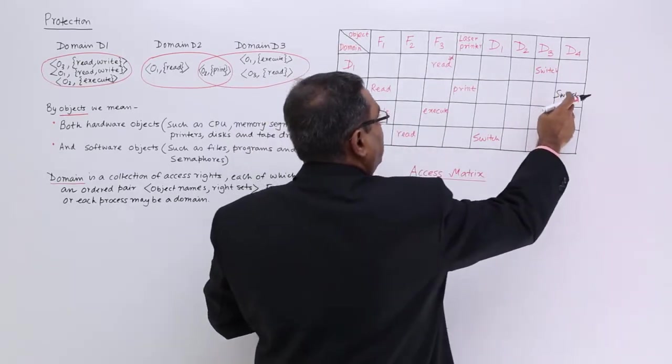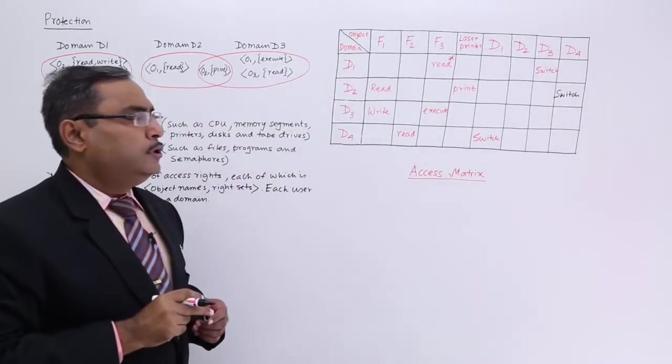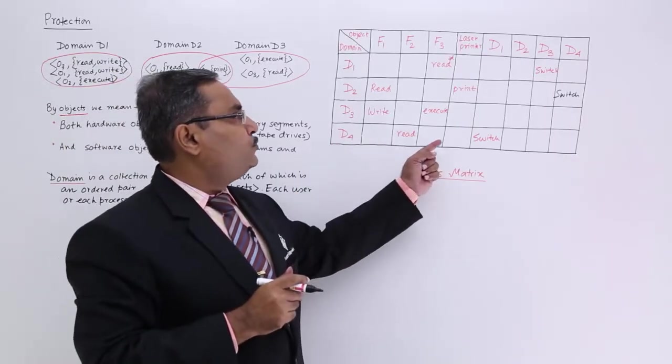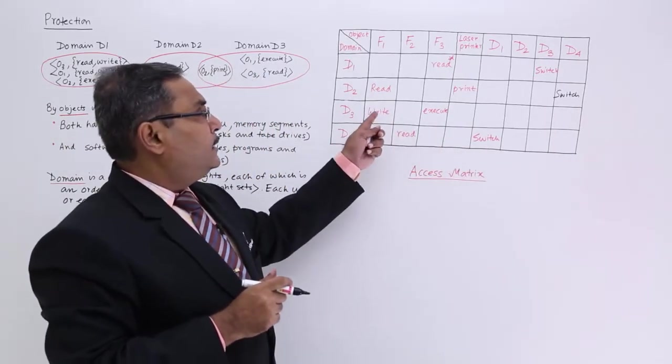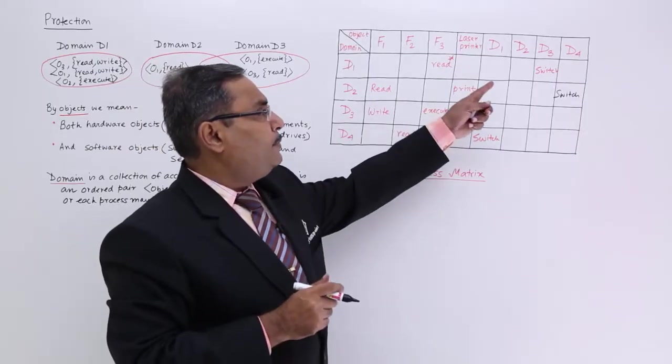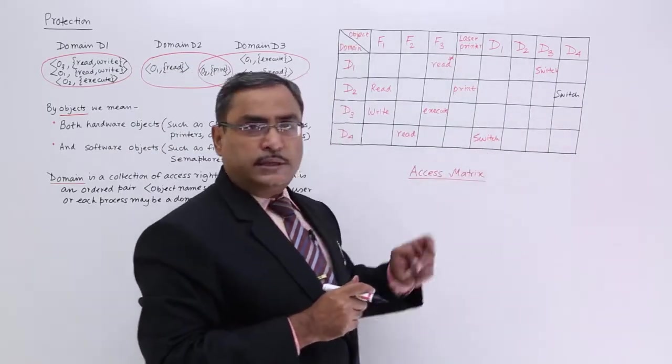So, from D2 I can switch to D4, so from D2 say from D4 I can switch to D1. So, these are the permissions, these are the switches I have depicted.